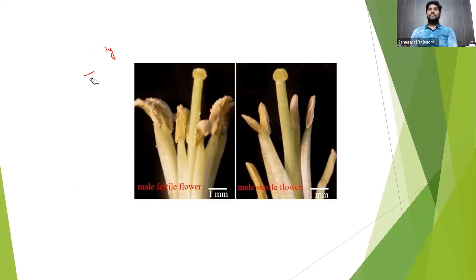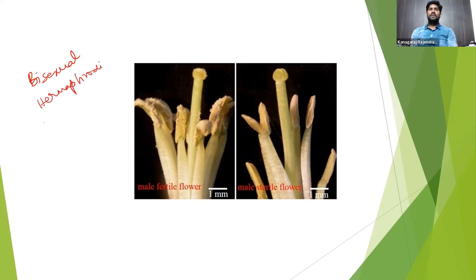So first of all, what is male sterility? In general, crop plants are bisexual in nature. They are also called hermaphrodite flowers. In animals, the sexes are different — male and female are separate. In some crop plants they are called dioecious — they have separate male and female plants. Example: papaya, palmyra, date palm. But the majority of crop plants are bisexual in nature.